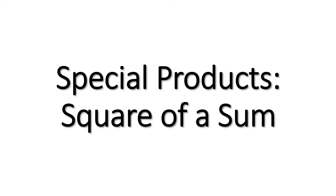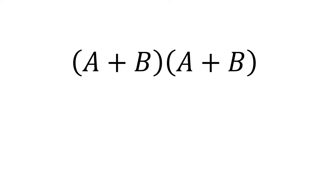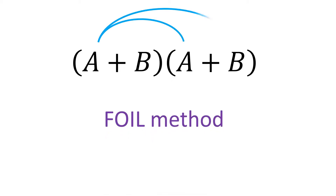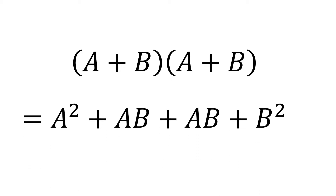In this video, we're going to learn a shortcut in multiplying a special product — the square of a sum. Let's say we have (a + b) squared. This means (a + b) times (a + b). Now using the FOIL method, this is equal to a squared plus ab plus ab plus b squared.